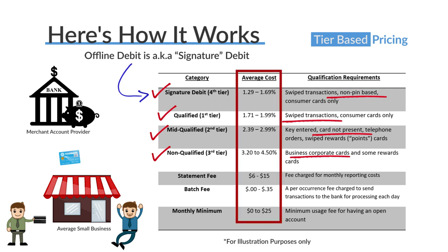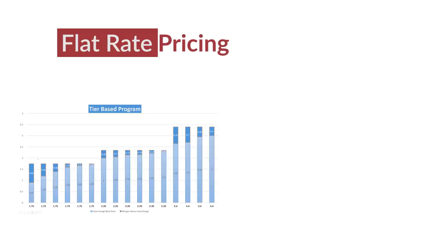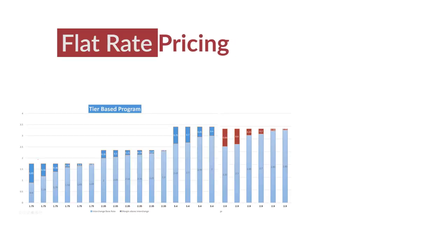Offline debit applies when a consumer pays with their debit card in a card-present environment. The corresponding percentage rates shown give an idea of the differences between rate categories — these ranges are for illustrative purposes, though fairly accurate for some companies. Note that card-present applies to both offline debit and qualified categories, covering retail and mobile acceptance environments.